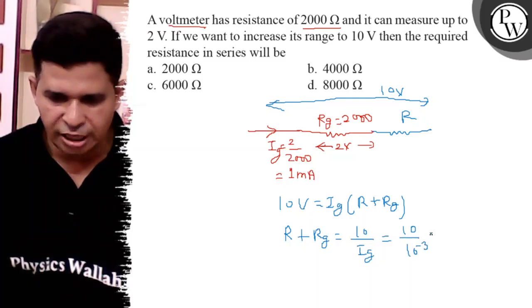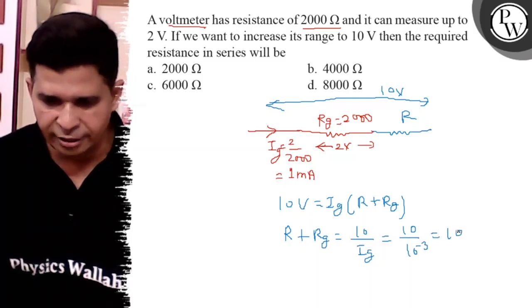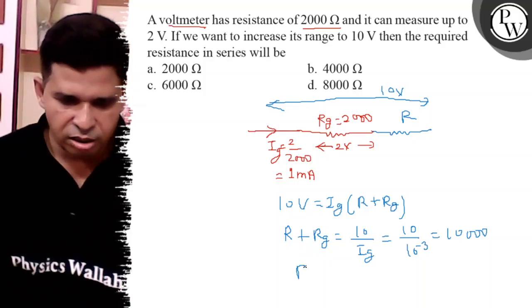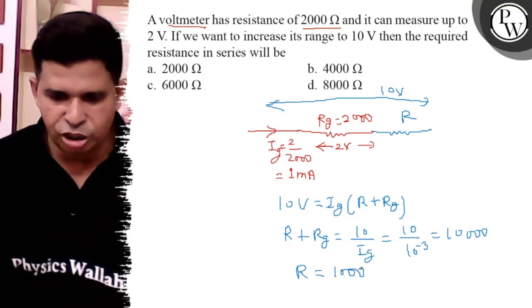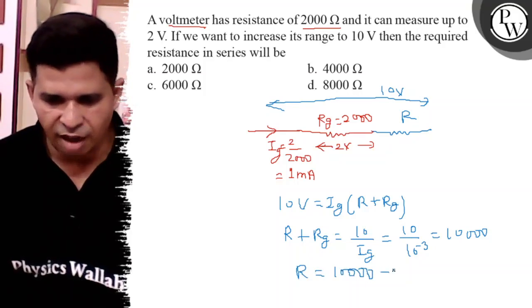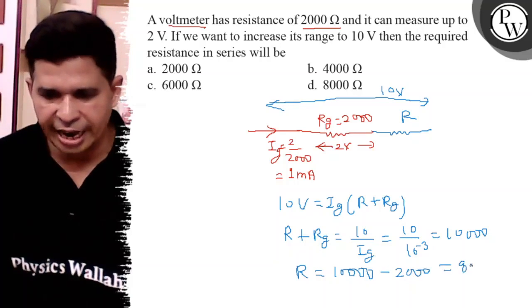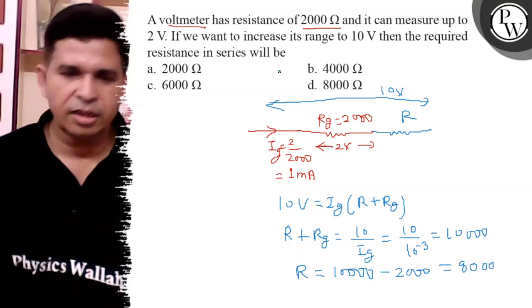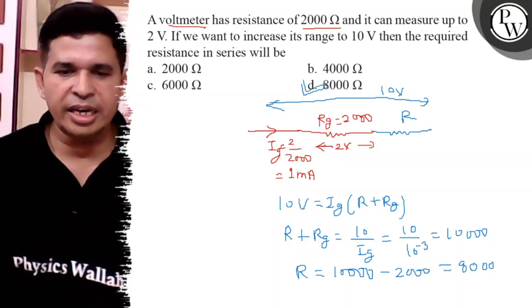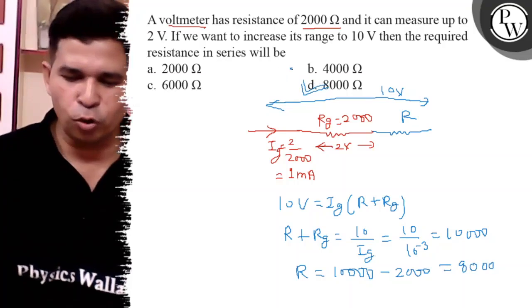10 upon 10 to the minus 3, so it is 10,000. What is r? r is 10,000 minus rg and rg is 2,000, so final answer is 8,000. The final answer is d, 8,000. Thank you, all the best.